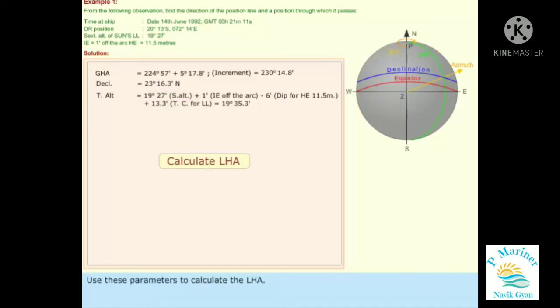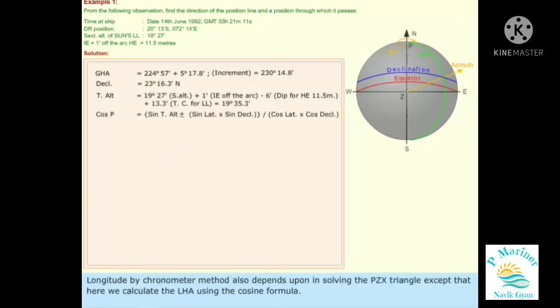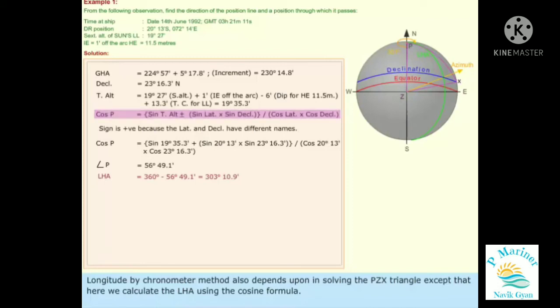Use these parameters to calculate the LHA. Longitude by Chronometer method also depends upon solving the PZX triangle, except that here we calculate the LHA using the cosine formula.